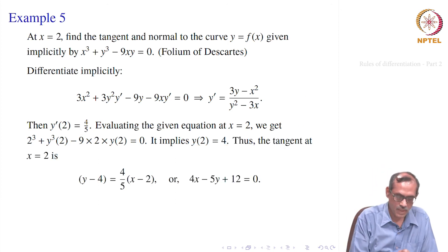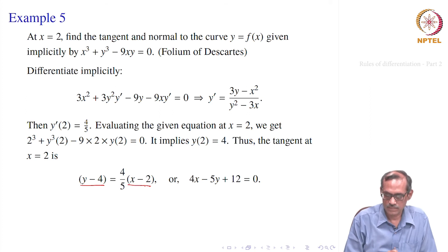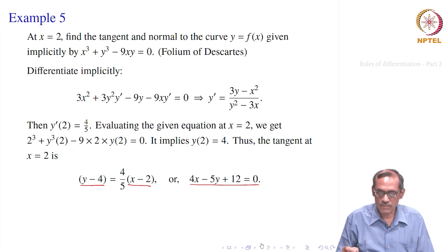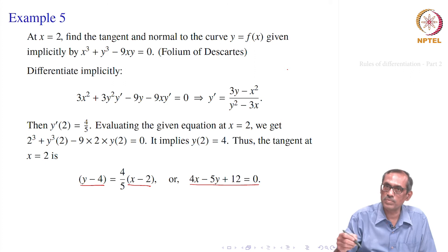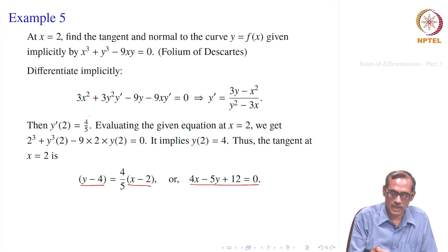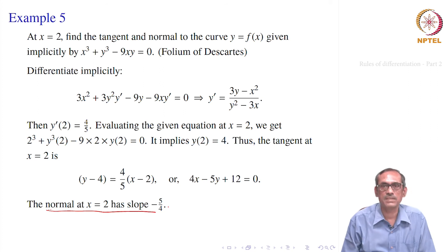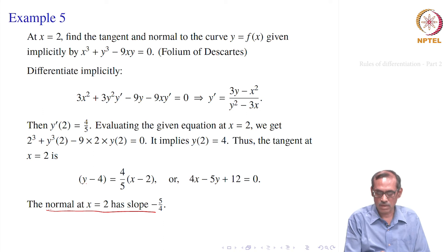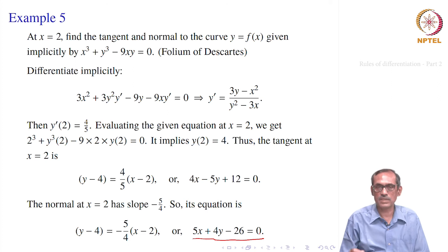So now we have y(2) and y′(2). At x equal to 2, the equation of the tangent is y minus y₁ equals slope y′(2) which is 4/5, times (x minus x₁). Simplifying, we get the equation of the tangent as 4x minus 5y plus 12 equals 0. For the equation of the normal, we need the slope. If two lines are perpendicular, their slopes multiply to minus 1. So if the slope of the tangent at (2,4) is 4/5, the slope of the normal is minus 5/4. Applying the point-slope formula gives 5x plus 4y minus 26 equals 0.